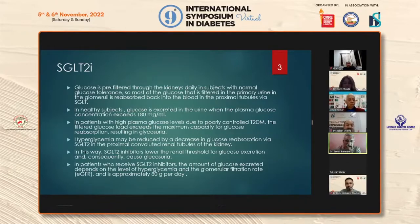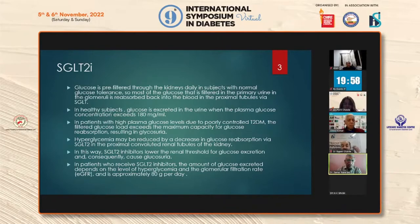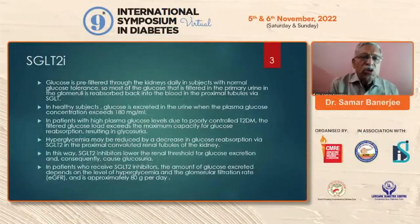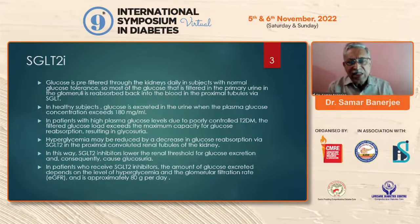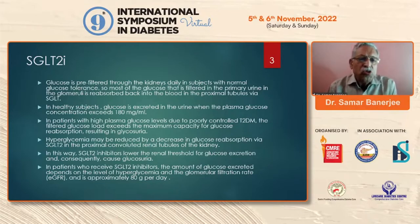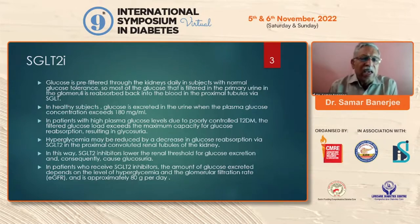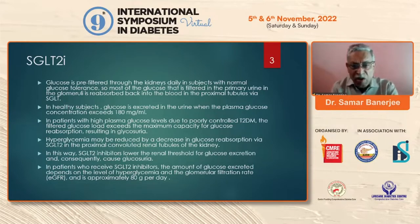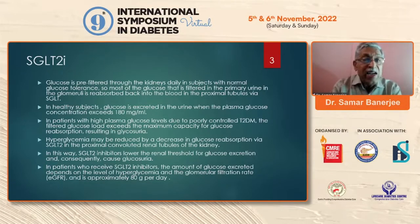In healthy subjects, glucose is excreted in the urine when plasma glucose concentration exceeds 180 mg/dL. In persons with high plasma glucose due to poorly controlled type 2 diabetes, the filtered glucose is in excess and leads to gross glycosuria. Hyperglycemia may be reduced by a decrease in glucose reabsorption via the SGLT2 receptors in the proximal convoluted tubules, T1 and T3 segments. In this way, SGLT2 inhibitors act on these receptors and prevent reabsorption of glucose, producing glycosuria and lowering blood sugar. In patients who receive SGLT2 inhibitors, the amount of glucose excreted is approximately 80 g per day.